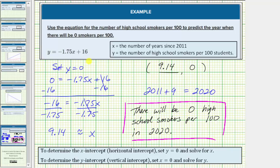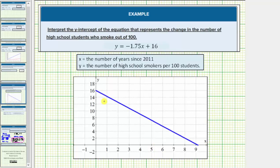Let's also look at the graph of the equation y equals negative 1.75x plus 16 on the coordinate plane. Here it is. And again, remember, y equals the number of high school smokers per 100, and there will be zero high school smokers per 100 at this point here.